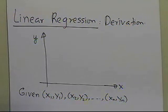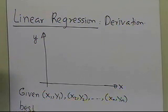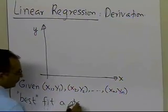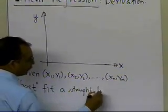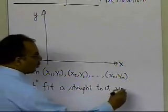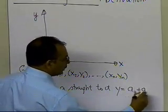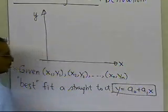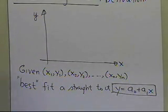And what you want to be able to do is best fit a straight line to it. That straight line, let's call it y = a0 + a1*x. That's the general form of a straight line, where a0 is the intercept and a1 is the slope.